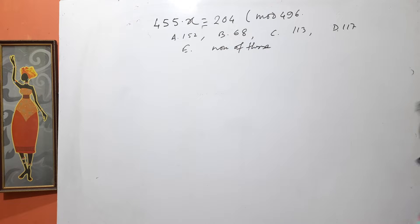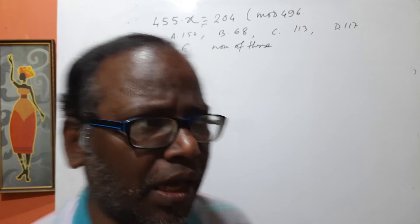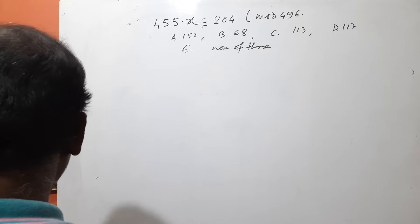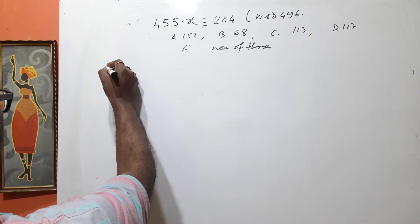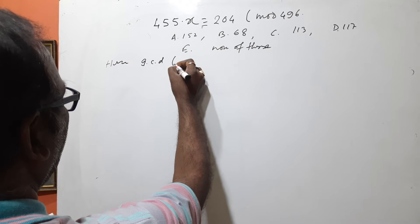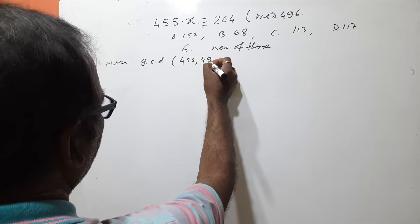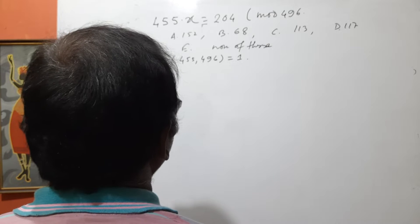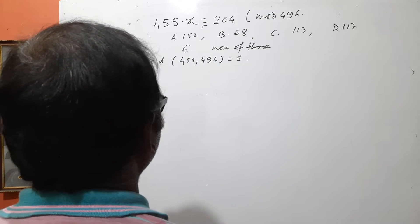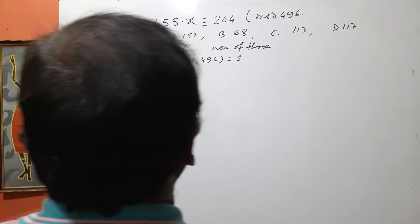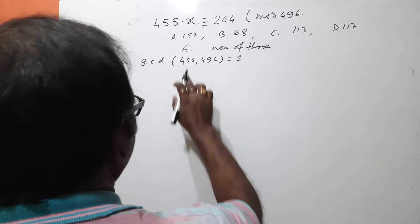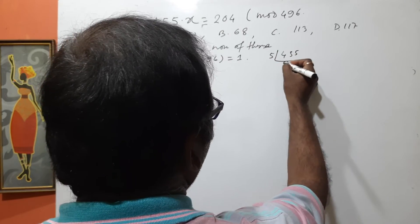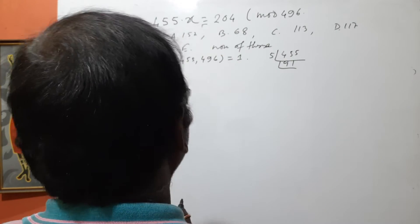The fifth option is none of these. To solve this problem, I am using a technique. See carefully — this is a very interesting problem. First, we want to find the GCD. The GCD of 455 and 496 equals 1. The reason is that the common factor of these two numbers — if we express them as prime factors — the common factor is actually one.